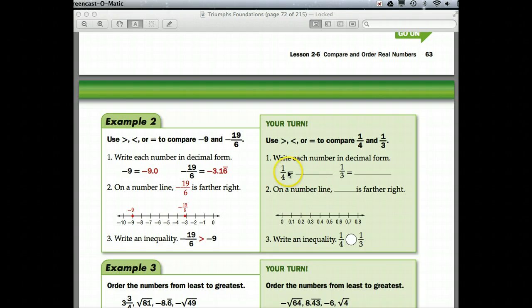Okay, we can rewrite 1/4 as 0.25, and 1/3 as 0.3333, and it keeps repeating. So, on a number line, 1/3 is to the farthest right. So, 1/4 and 1/3, 0.25 is going to be right here. The 0.3333 is going to be right in here. So, write an inequality, 1/4 is less than 1/3.